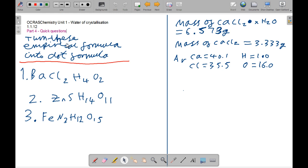OK, so now we'll turn our attention to some quick questions if you want to have a go at any. So turn these empirical formulae into dot formulae first. And then we have this example, the mass of calcium chloride dot xH2O is 6.573 grams and the mass of CaCl2 is 3.33 grams.